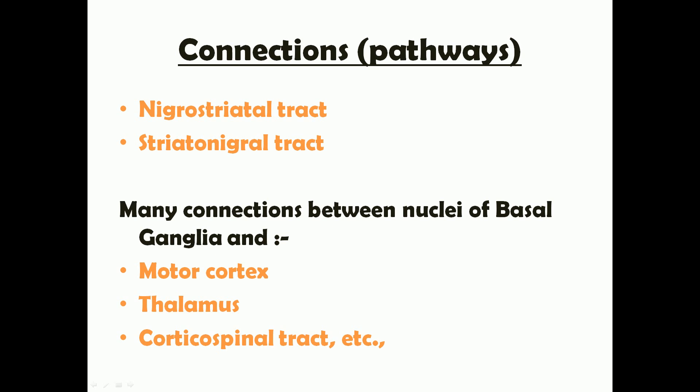Among the various connections, the most important are the nigrostriatal tract and the striatonigral tract. The nigrostriatal tract runs from the substantia nigra to the striatum — the striatum being the putamen and caudate nucleus together. The striatonigral tract runs from the striatum back to the substantia nigra. These two tracts are individually involved in the pathogenesis of two major diseases, which will be discussed later.